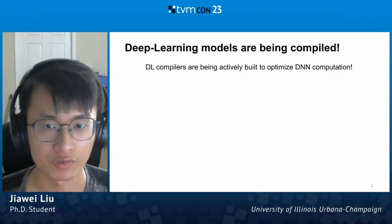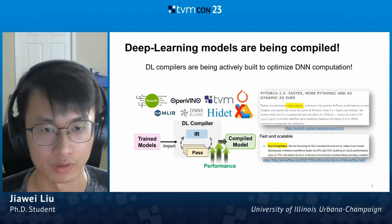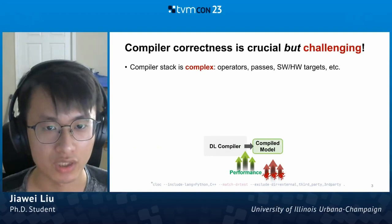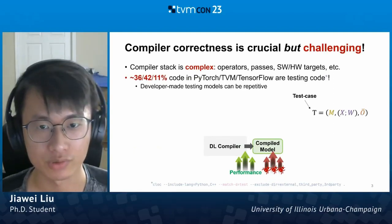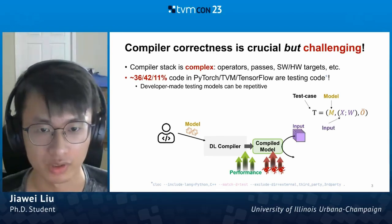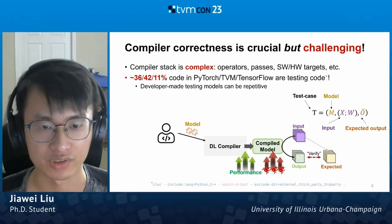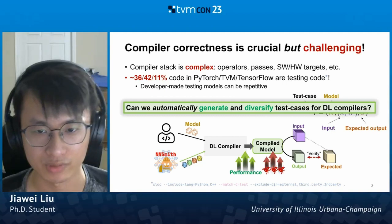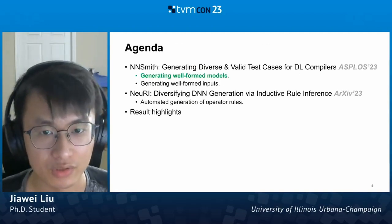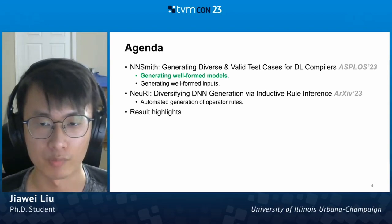With the recent advance of compilation technologies, deep learning compilers are being widely used to improve the performance of deep learning. While the compiler brings systematic performance improvement, it is challenging to ensure correctness. Developers wrote many test cases — given a model and its computational input, we check if the compiled model returns expected results. Because crafting a huge test suite is expensive, in this work we aim to automate the process via automatic test case generation. To address this challenge, we built a tool called NNSmith, and in this talk we'll cover two papers in this project.